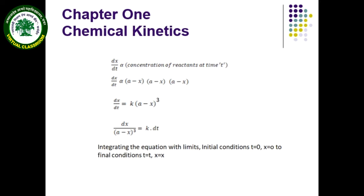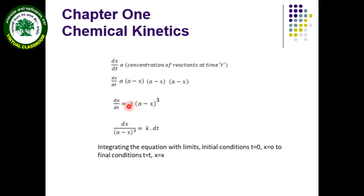The rate equation is: dx/dt is proportional to the concentration of reactants at any time t. The concentration of reactants is (a minus x) × (a minus x) × (a minus x), because we have 3A. Removing the proportionality sign and adding the rate constant k, this equation becomes: dx/dt equals k times (a minus x) raised to the power 3. This is the differential form of the third-order reaction kinetics.